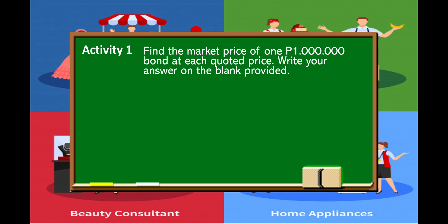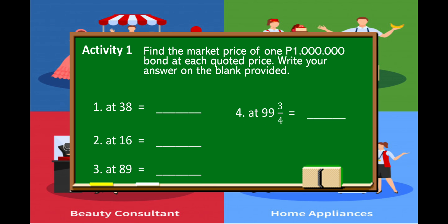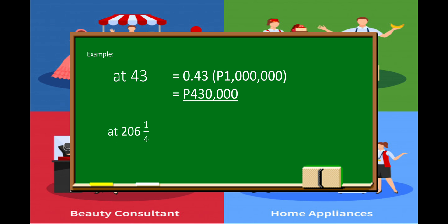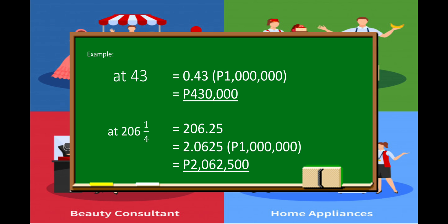For your activity, you are going to find the market price of a 1,000,000 bond at each quoted price. Write your answer on the blank provided. The quoted prices are: at 38, at 16, at 89, at 99 and 3/4, and 106 and 1/2. For example, at 43 means at 43%, so we change that into a decimal by dividing by 100, giving 0.43, then multiply by 1 million pesos, which equals 430,000. Another example, at 206 and 1/4 means 206.25%, because 1/4 is 0.25. Dividing by 100 gives 2.0625, then multiplying by 1 million gives 2,062,500 pesos.